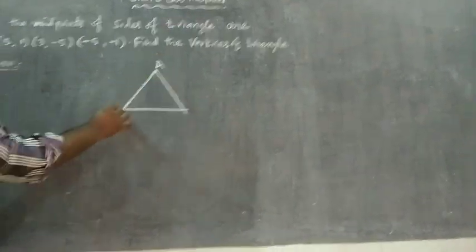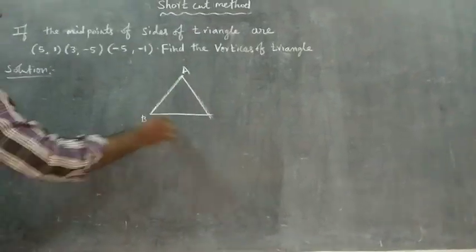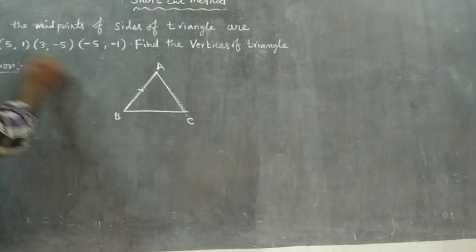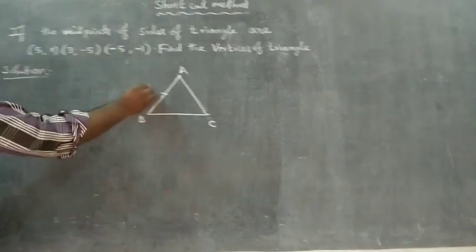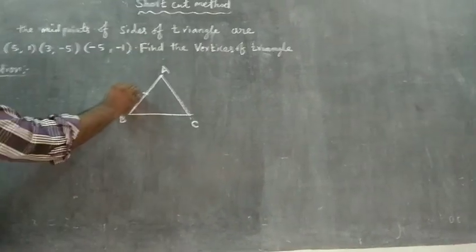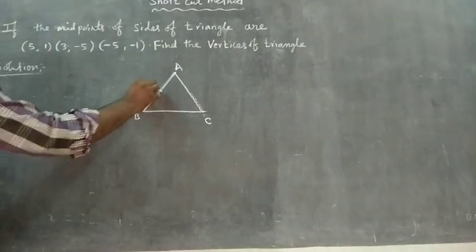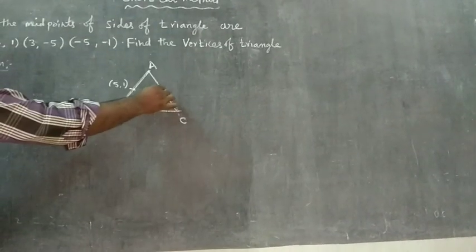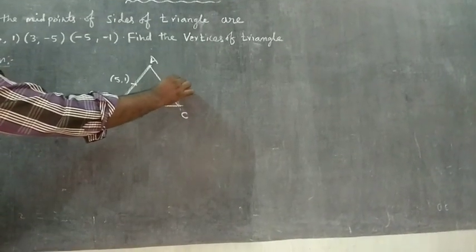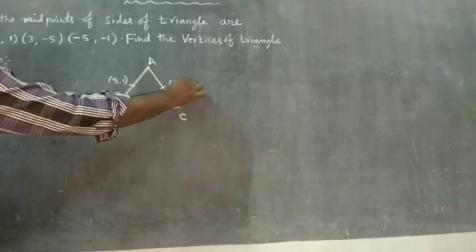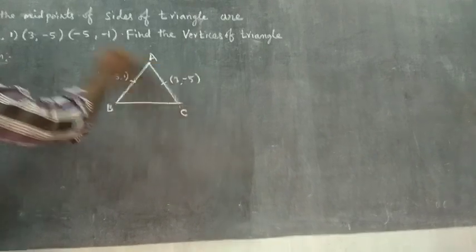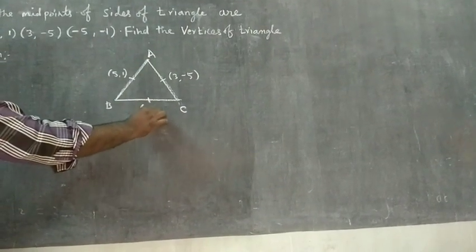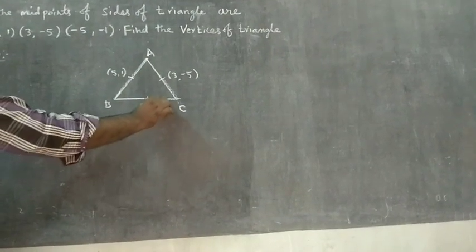I am going to label the vertices A, B, C of the triangle. The midpoints are given. Take first midpoint (5,1), second midpoint (3,-5), third midpoint (-5,-1).